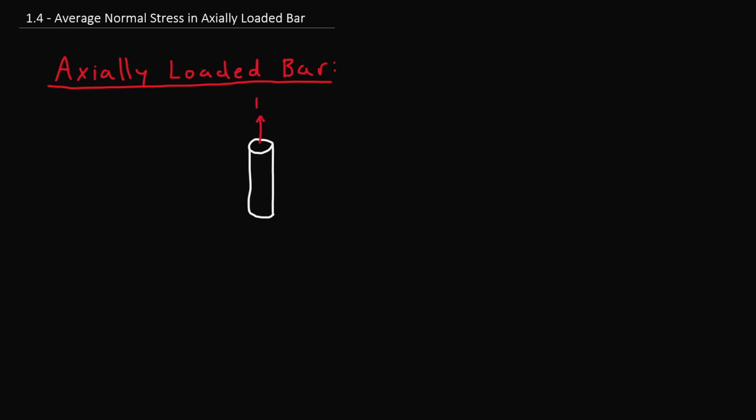Let's say we have a cylindrical metal bar that is subjected to an axial load P. And of course remember that an axial load is simply one that acts along the longitudinal axis just like you see here.